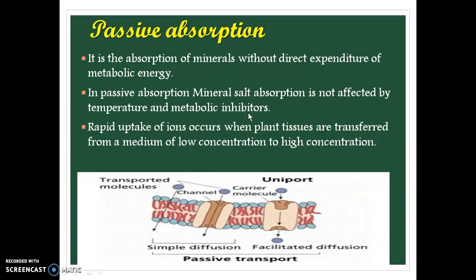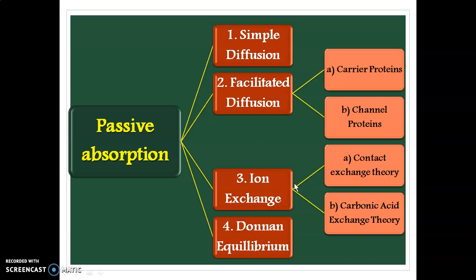Passive absorption. In passive absorption, there is no direct expenditure of energy. Mineral salt absorption is not affected by temperature or metabolic inhibitors because there is no need of energy. Temperature and inhibitors affect metabolic processes like respiration and photosynthesis which produce metabolic energy, but in passive absorption there is no need for energy, so these factors also have no effect. Rapid uptake of ions occurs when plant tissue is transferred from a medium of low concentration to high concentration, meaning passive absorption moves according to concentration gradient.